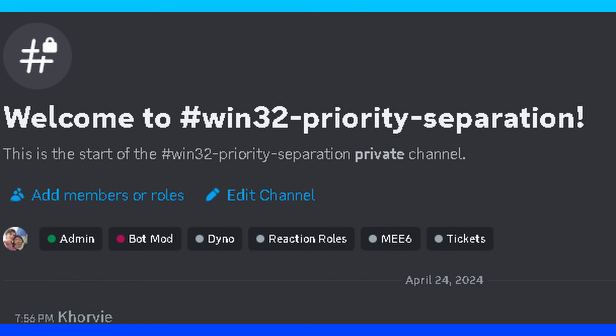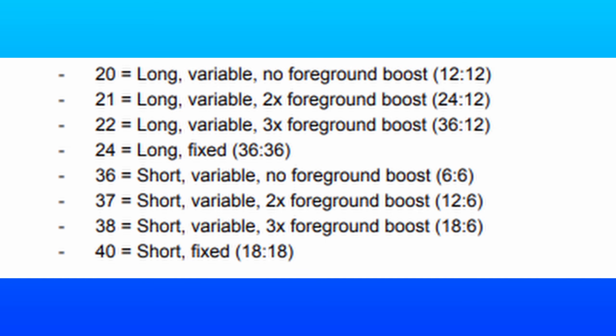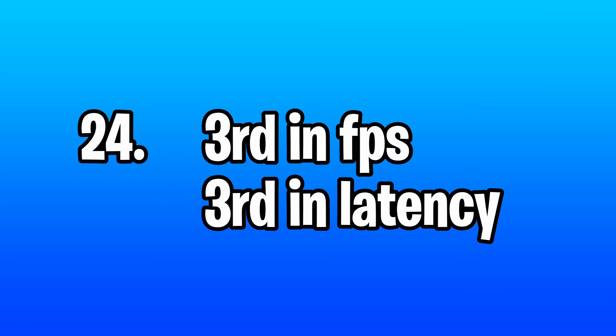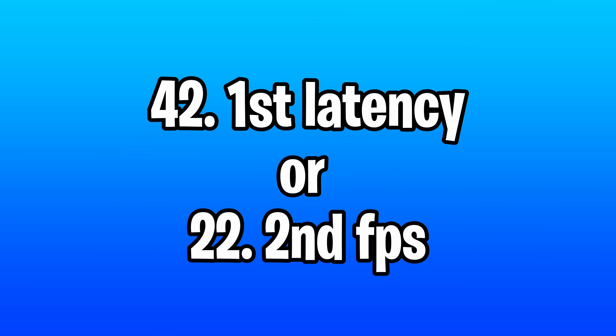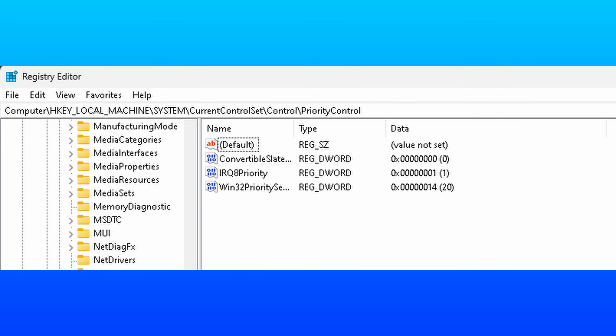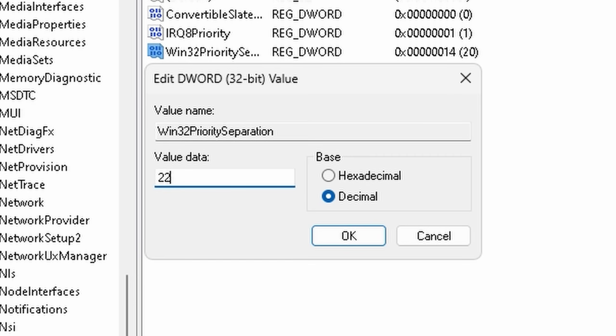If you're curious about the rest of my results, I'll be posting them in my Discord sometime after this video launches. Now, on paper, 22 should be the best value since it's a times-3 foreground boost with long quantum. But honestly, since 24 placed in both categories, it might be worth starting there. And then if that doesn't run well, try either 22 or 42. We can change that by following this registry path that I'll be leaving in the description for you to copy and paste. Once here, just double-click, go to decimal, and input the value that you'd like to try.